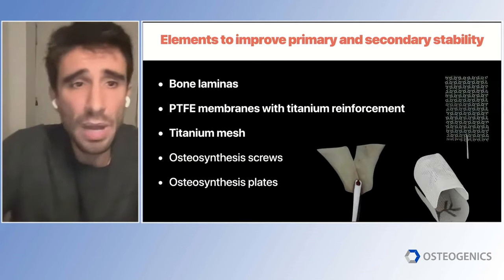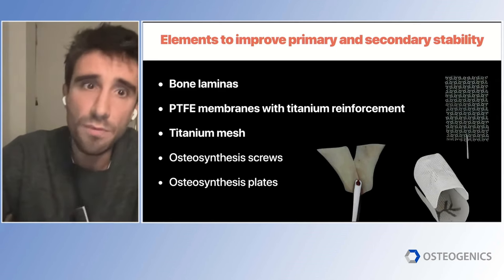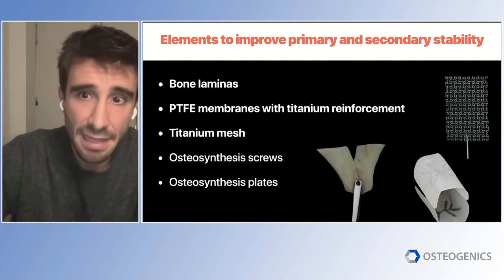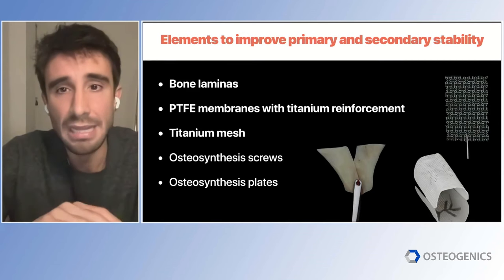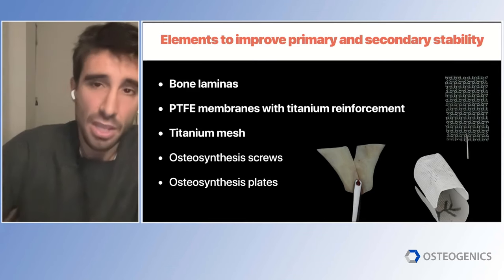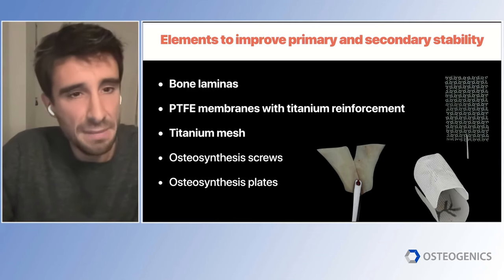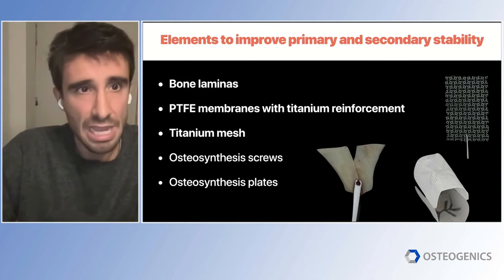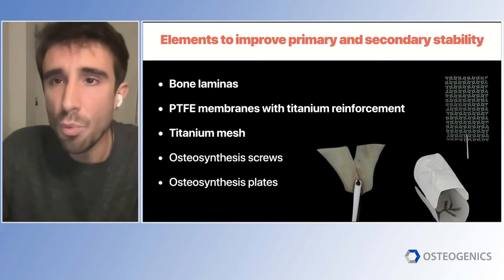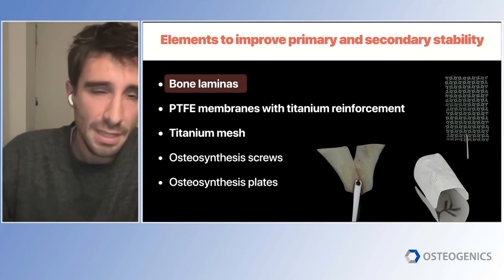That's why when facing long defects with poor bone housing, we should help ourselves by using non-resorbable elements that will maintain graft stability during all the healing time. We have many options: bone laminas, PTFE membranes, titanium meshes, screws, plates. We are going to see now how, by using these elements, we can significantly improve our results in horizontal GBR approaches.